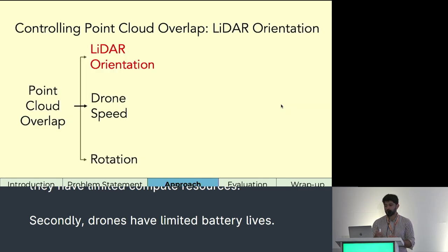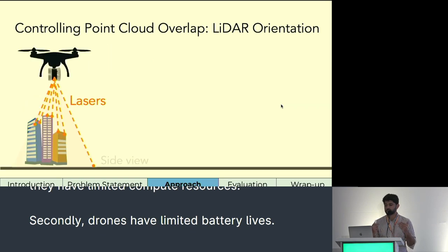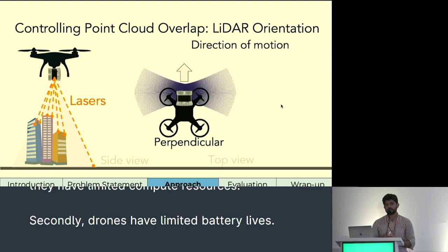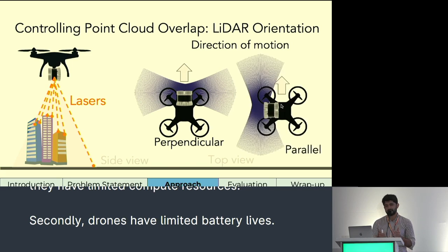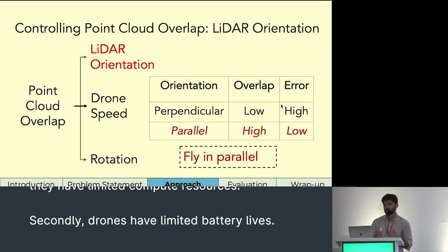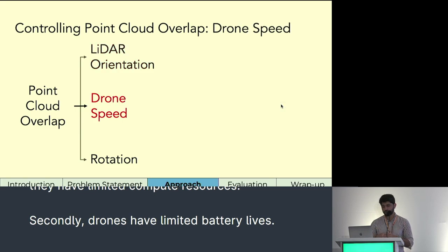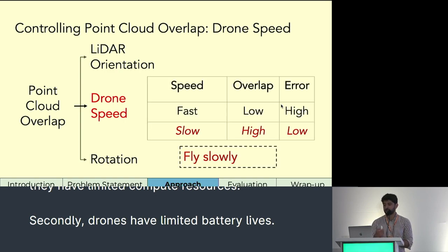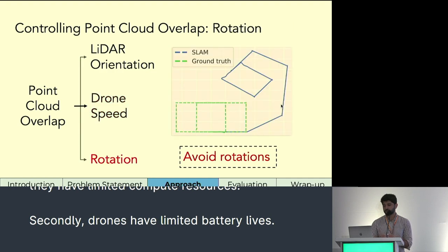Onboard a drone, we can control overlap with LiDAR orientation. To get maximum returns, we position the LiDAR such that its lasers hit the ground at a perpendicular angle. In the perpendicular orientation, the LiDAR scan lines are perpendicular to the drone's direction of motion, whereas in the parallel orientation, they are parallel to the direction of motion. Our experiments show that a parallel orientation ensures high overlap and hence results in low positioning error. Similarly, the drone's speed also controls overlap — flying slower ensures high overlap and reduces error.